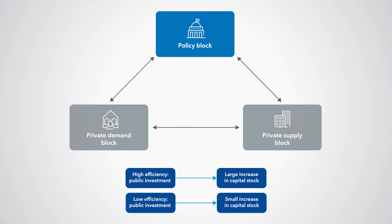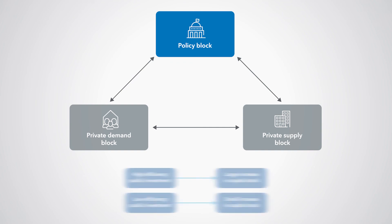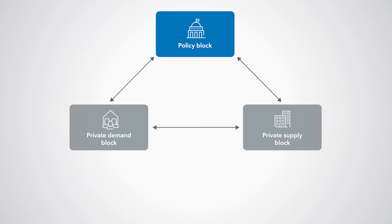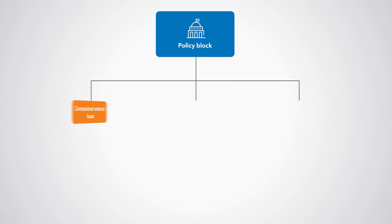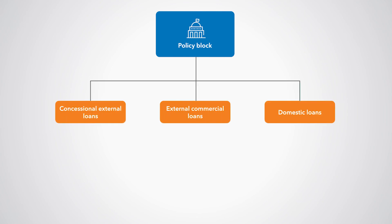The models do not feature monetary policy decisions. The government is assumed to have access to three types of loans for which it pays interest: concessional external loans, like aid, and external commercial loans.